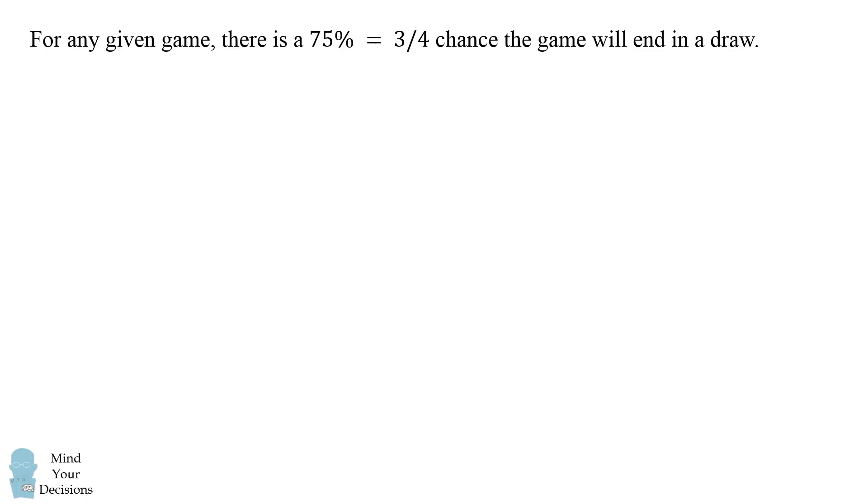For a given game, there is a 75% or 3 in 4 chance the game will end in a draw. What's the chance of all games that it will end in a win or a loss for you? Notice there is 1 minus 3 fourths which equals 1 fourth chance that any particular game will not end in a draw.